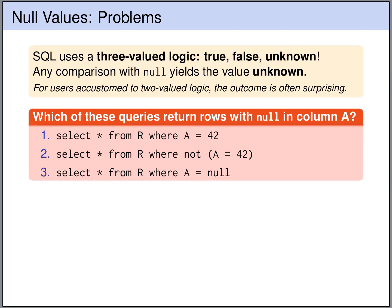So what are the possible problems around NULL values? First of all, we have to know that SQL uses a three-valued logic. We have the truth values TRUE, FALSE and UNKNOWN. For users that are accustomed to the usual two-valued boolean logic, their outcomes can often be very surprising. In particular, any comparison with NULL will always result in UNKNOWN.